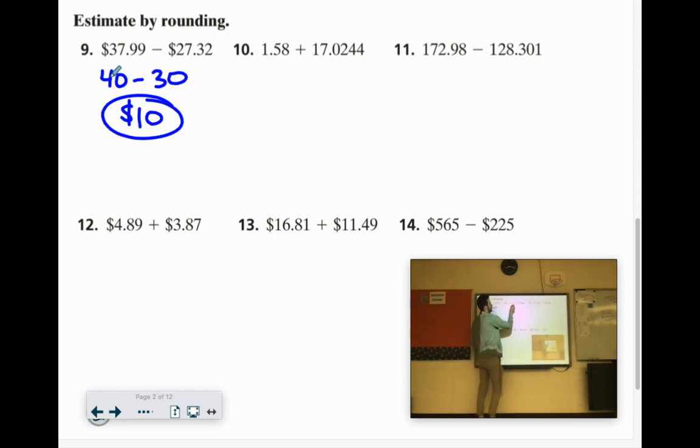So here I'm going to call this 1.58. I'm going to call it 2. This is 17.02. I'll just call it 17. 2 plus 17 would give me 19.